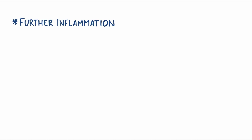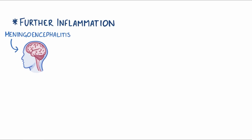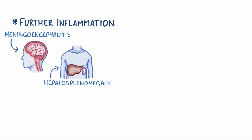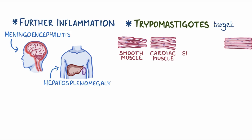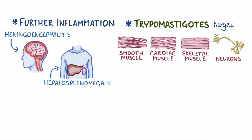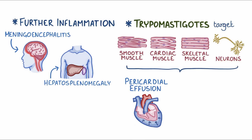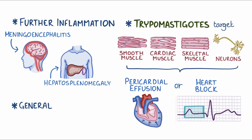Further inflammation can also lead to meningoencephalitis, which is inflammation of the membrane covering the brain and brain tissue, as well as hepatosplenomegaly, which is when the liver and spleen become enlarged. Tripomastigotes have a tendency to target certain tissues and cells, like smooth muscle, cardiac muscle, and skeletal muscle, as well as neurons. When those cells are damaged, it can lead to problems like a pericardial effusion where fluid collects around the heart, disrupting its function, or issues like the electrical signals in the heart leading to heart block. Generalized tissue damage can also lead to symptoms like fevers and fatigue.